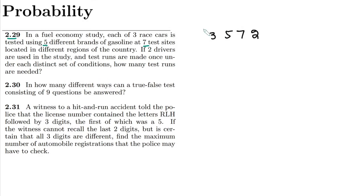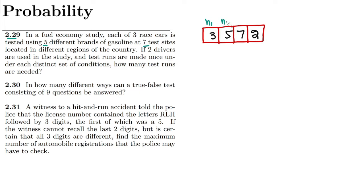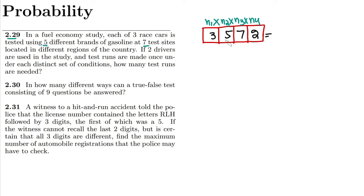Let me set up the slots as we have done previously. We have four slots with different options. Multiplying them together: 3 × 5 × 7 × 2 — that gives us 3 × 5 = 15, 15 × 7 = 105... arriving at 210. So 210 is the answer to question 2.29.